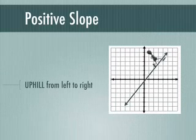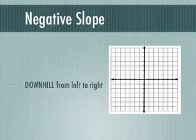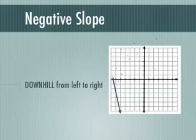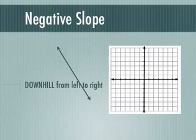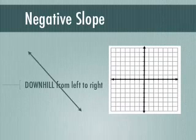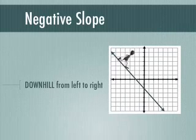Let's watch our guy go uphill. Negative slope is going to go downhill when you read it from left to right. Here are examples of a negative slope — negative slope, downhill. Down like frown. Down, negative.